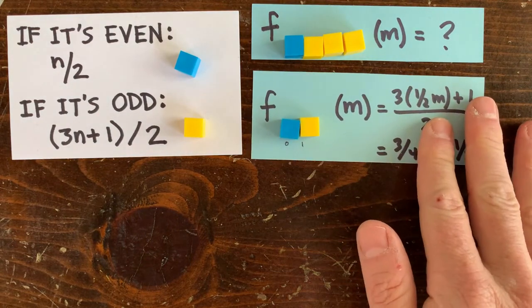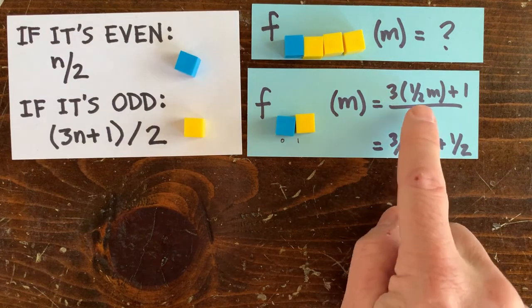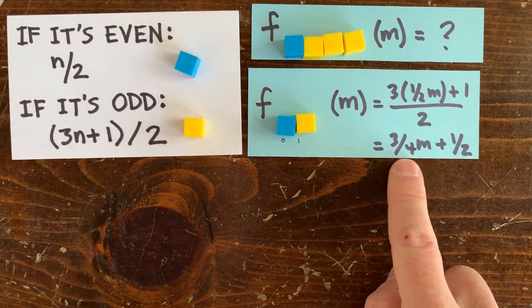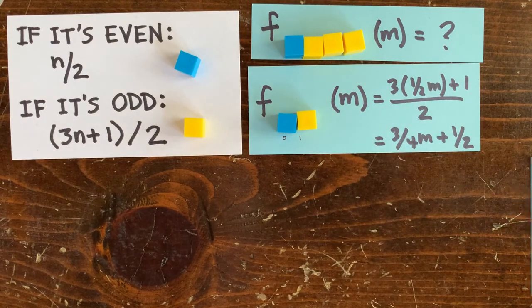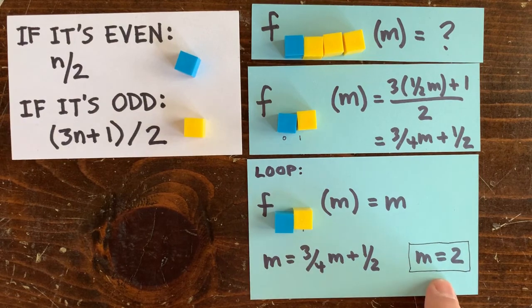If the operation sequence is, for example, a half followed by 3n plus 1 over 2, then here's the formula. First we take a half, then plug that result into 3n plus 1 over 2, which simplifies to this. And we can use this function to find loops by setting the function equal to m and solving for m. Here we get m equals 2.